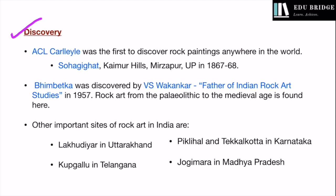Now let us look at the major discoveries with respect to prehistoric paintings. You must remember this name: A.C.L. Carlisle. He was an archaeologist with the Archaeological Survey of India, and in 1867-68, while conducting explorations in UP, he discovered some rock paintings at a place called Sohagi Ghat in the Kaimur hills of Mirzapur in UP. Thus, he was the first to discover rock paintings anywhere in the world, though Carlisle never published his findings.